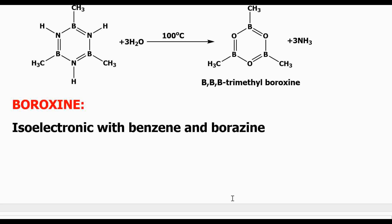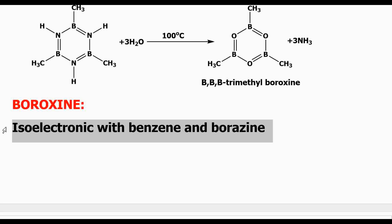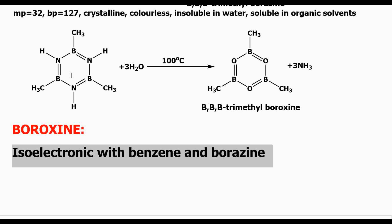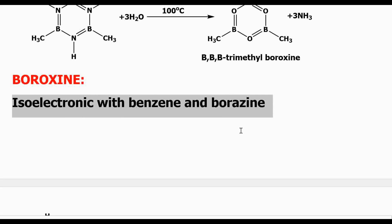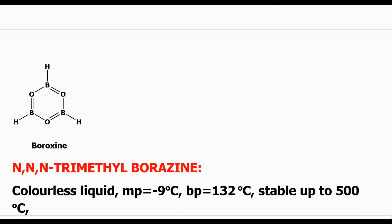Then we will have a look at one more derivative — boroxine. This compound is isoelectronic with benzene and borazine. You will see that when you compare these, in place of NH you have put oxygen. We know that the atomic number of boron is 5, carbon is 6, nitrogen is 7, and oxygen is 8. Oxygen has one less hydrogen — if it was nitrogen it would have one hydrogen. So one electron less and one atomic number more means that boroxine is isoelectronic with both benzene and borazine.